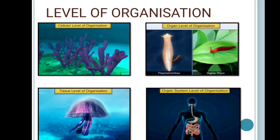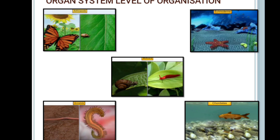Organ level of organization is exhibited in members of platyhelminthes and other higher phyla, where the tissues are grouped to form organs and each organ performs a particular function. The last cell pattern is the organ system level of organization, where organs are associated with one another to form a functional system, and each system performs a specific physiological function. Animals like annelids, arthropods, echinoderms, and chordates exhibit this level of organization.